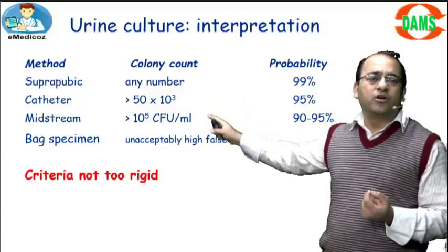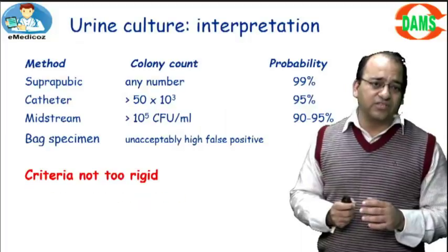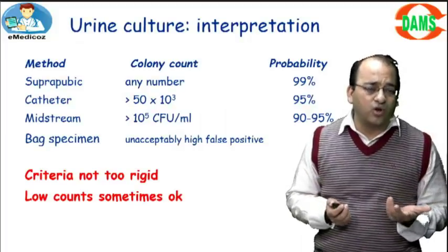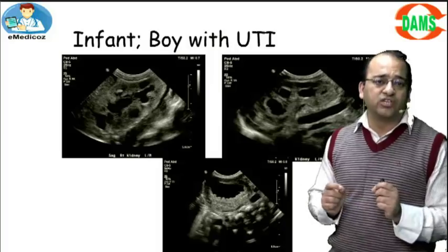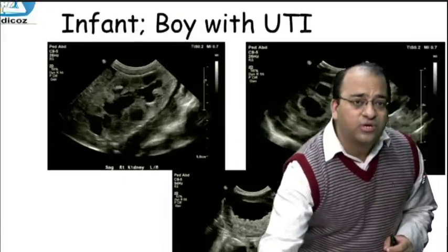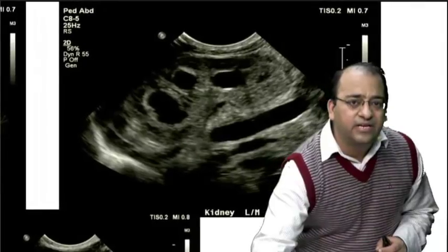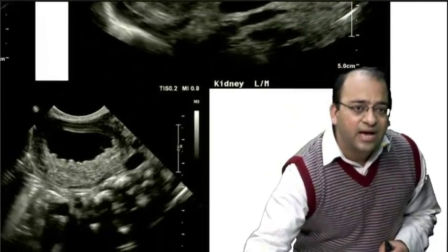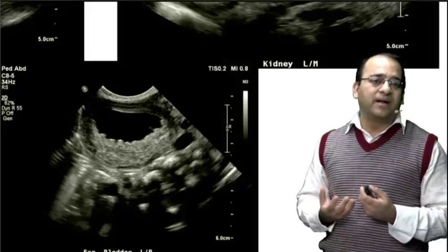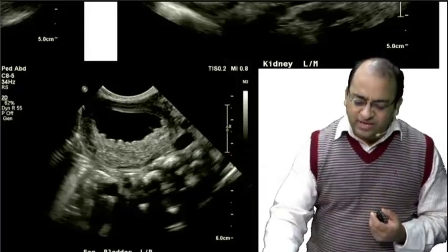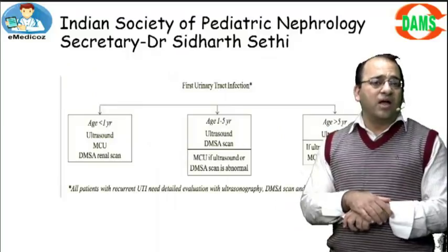Now, how do we investigate UTI? You need to do an ultrasound in every child with urinary tract infection. On the screen is an ultrasound showing severe hydronephrosis of the right and left kidneys with dilated calyces. This child also has a thick-walled urinary bladder — bladder wall thickness more than 5 mm is considered thick.